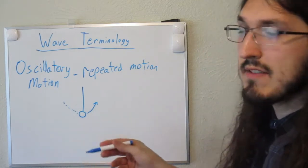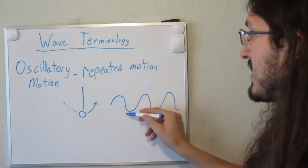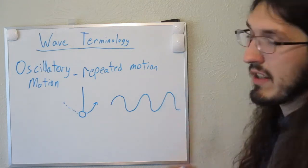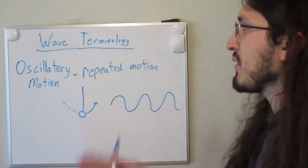Similar to pendulums, waves oscillate. If we follow the path of this wave we can see that it goes up and down, up and down, up and down in a repeated motion. So we say that waves undergo oscillatory motion.